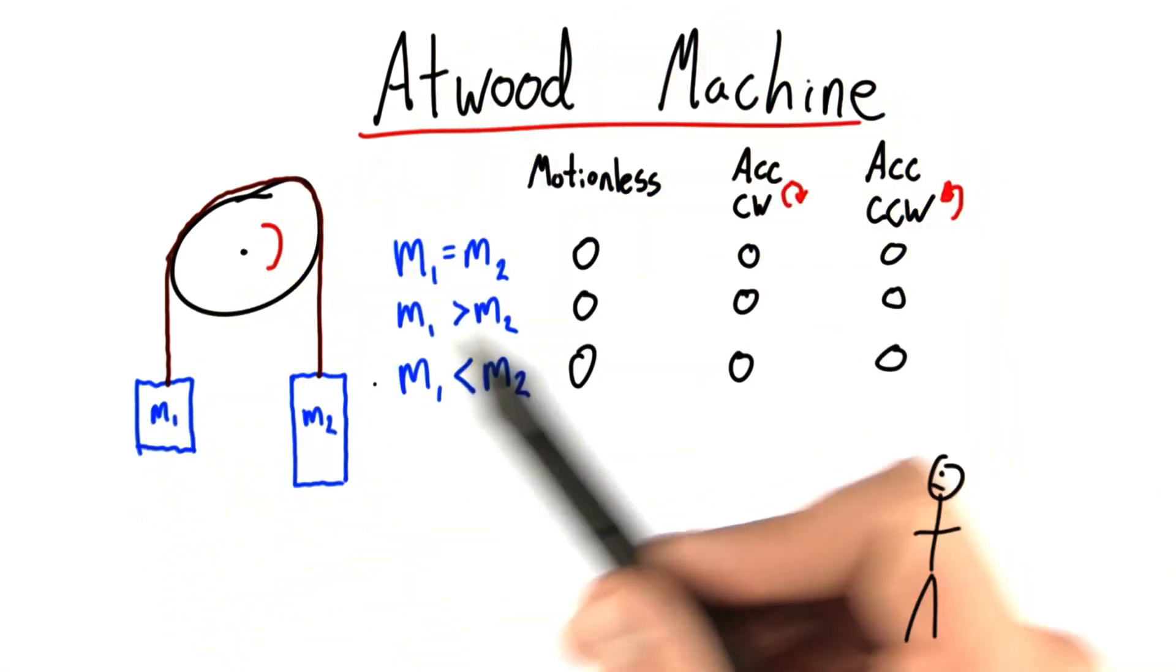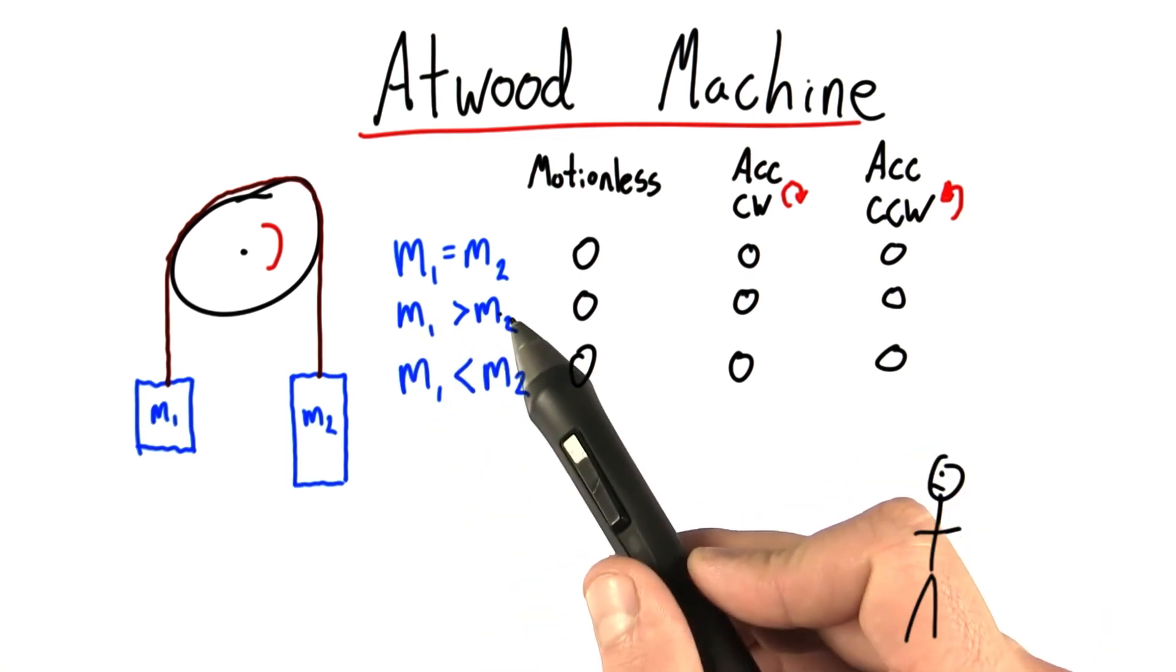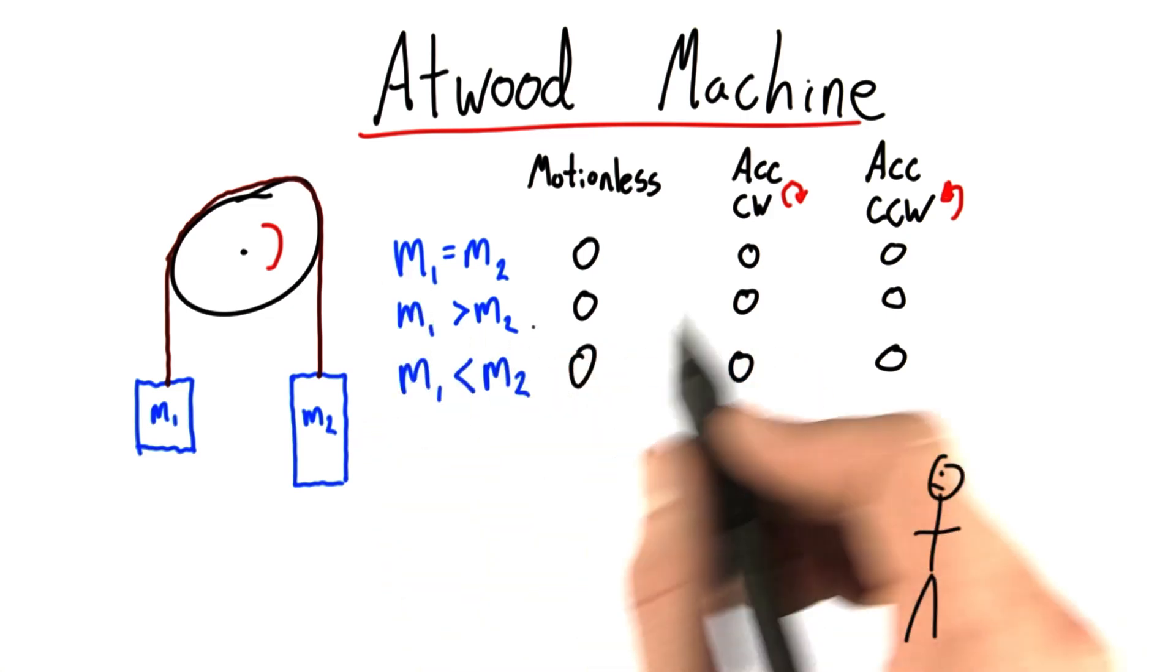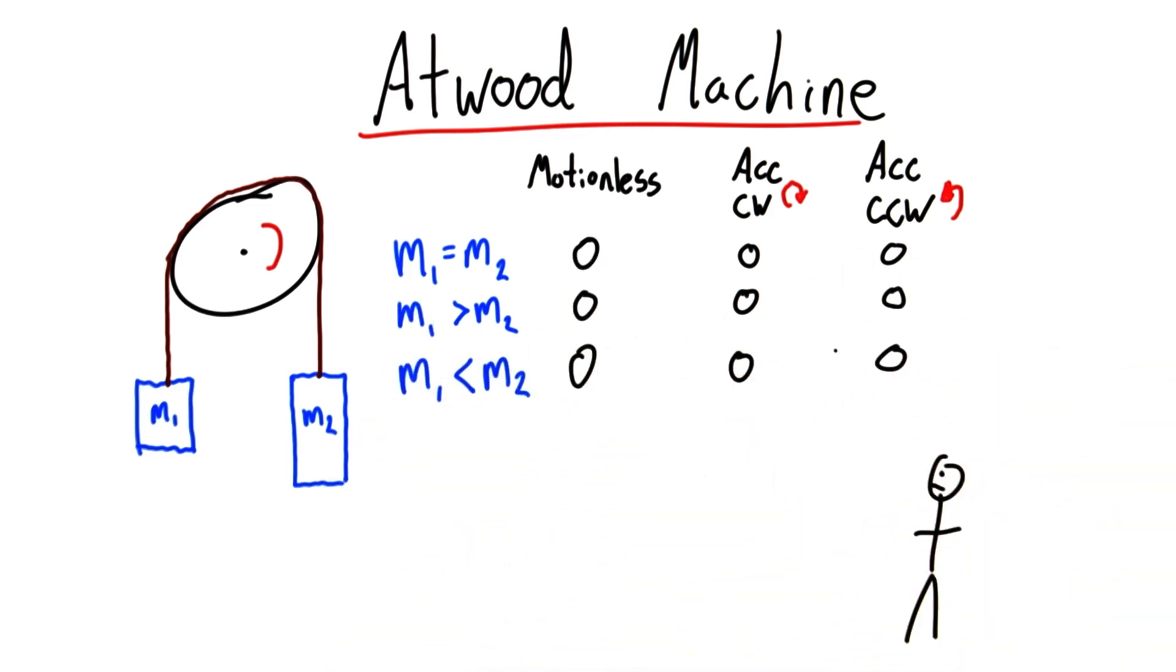I'm also going to want to think about what will happen when m1 is the bigger mass, so if this guy is heavier than this guy, or when m1 is the smaller mass. Can you, for each of these three cases, tell me what you expect the motion to look like? We'll be back.